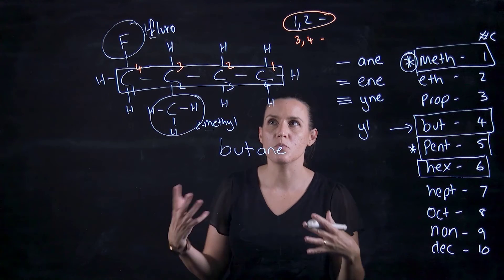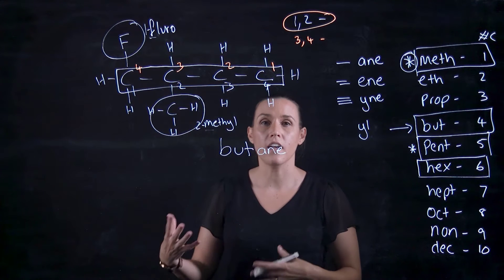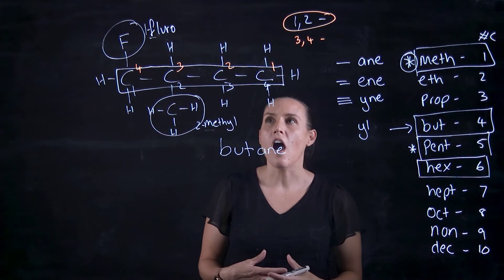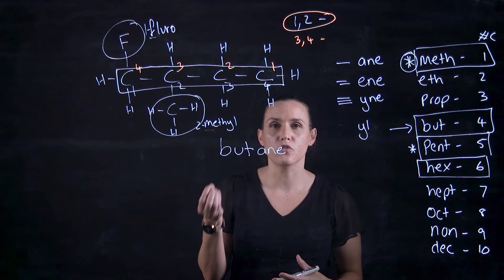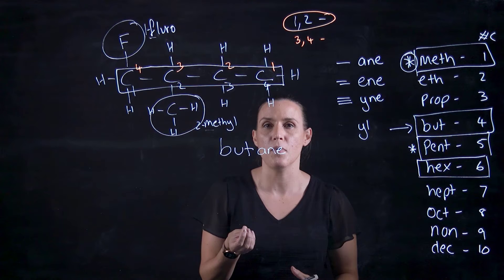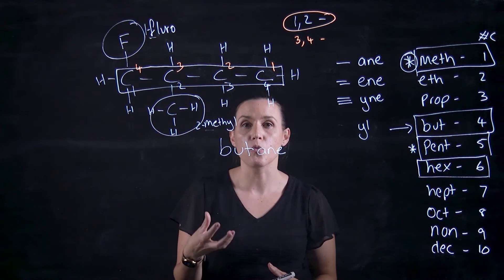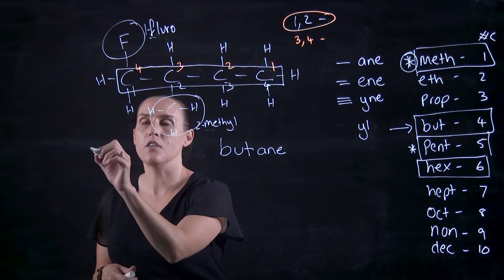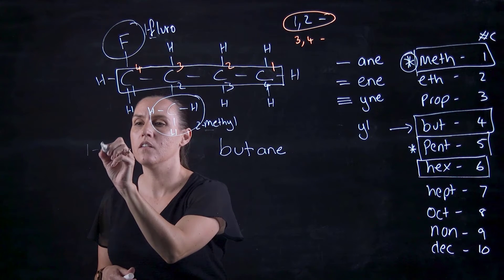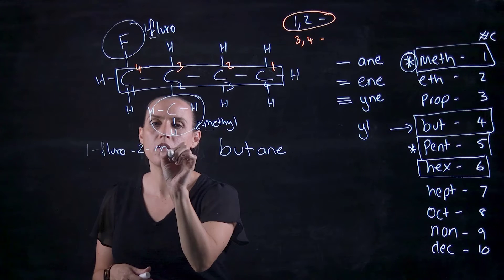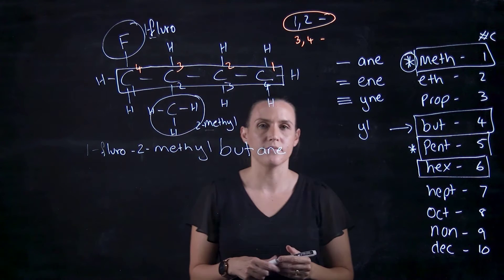So looking at the F and the M and putting them in alphabetical order. If I have multiple fluoros, I might have di, tri, so di being 2, tri being 3. I don't look at that di or tri for producing that alphabetical order. I look at the actual compound or group that's attached there. So it would be 1-fluoro, 2-methyl butane.